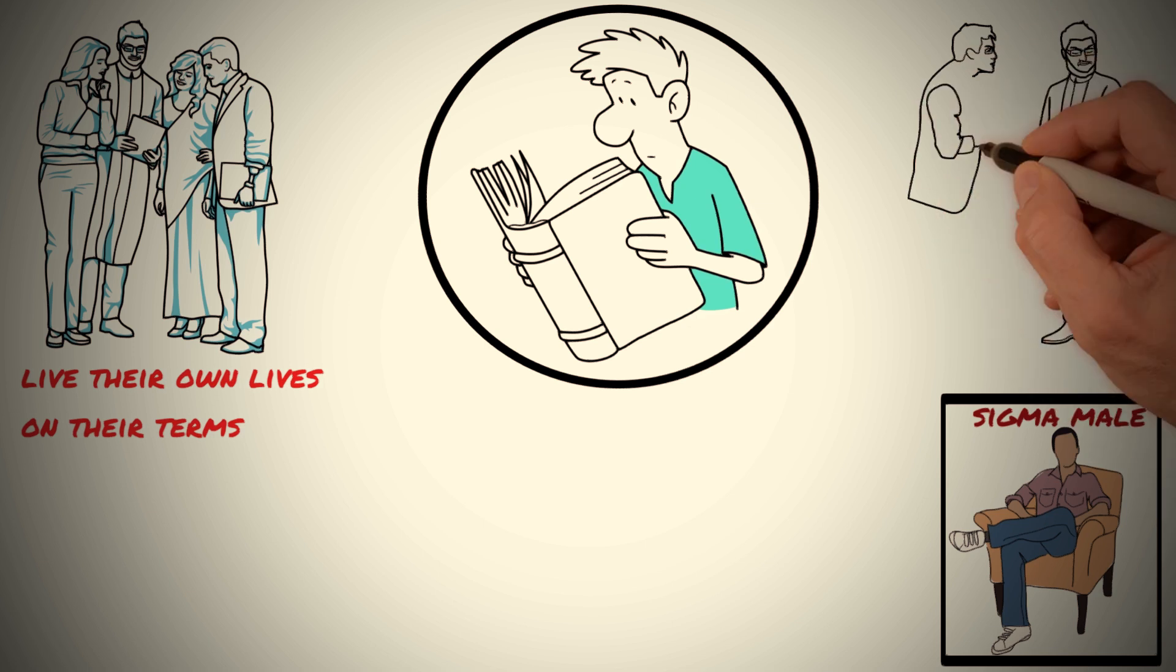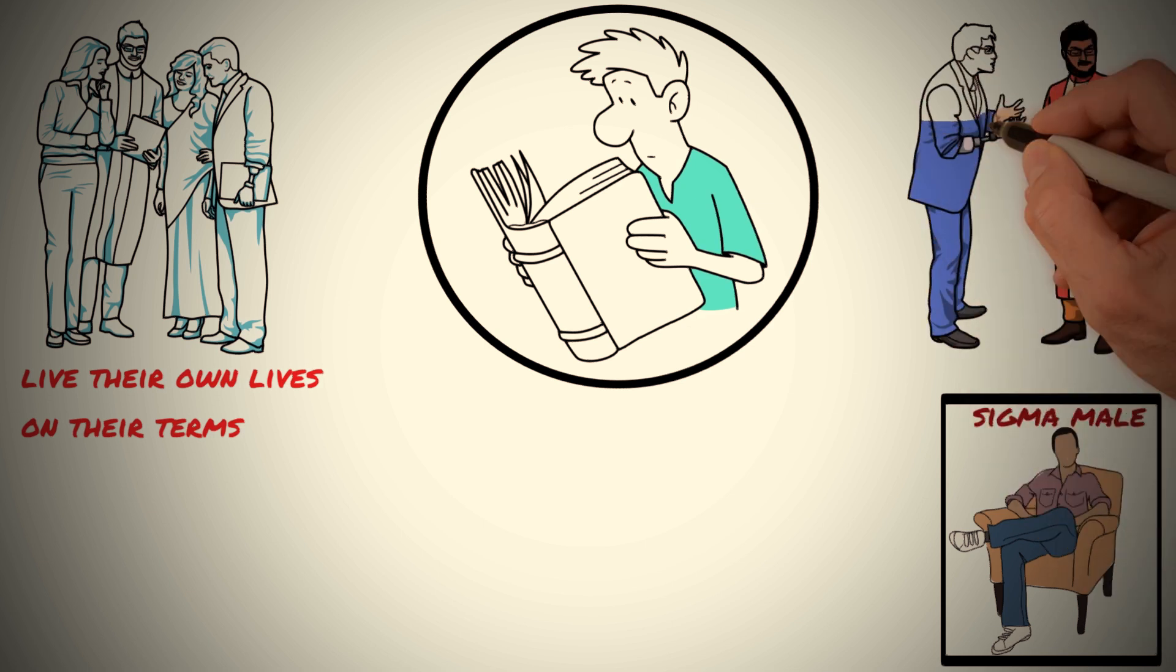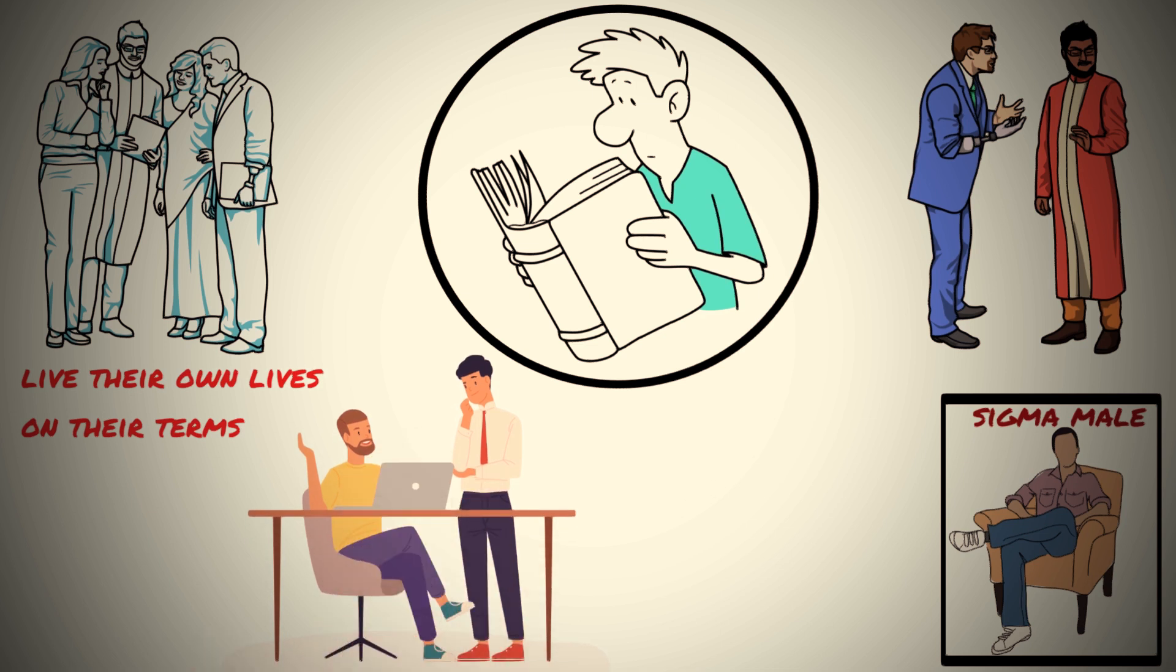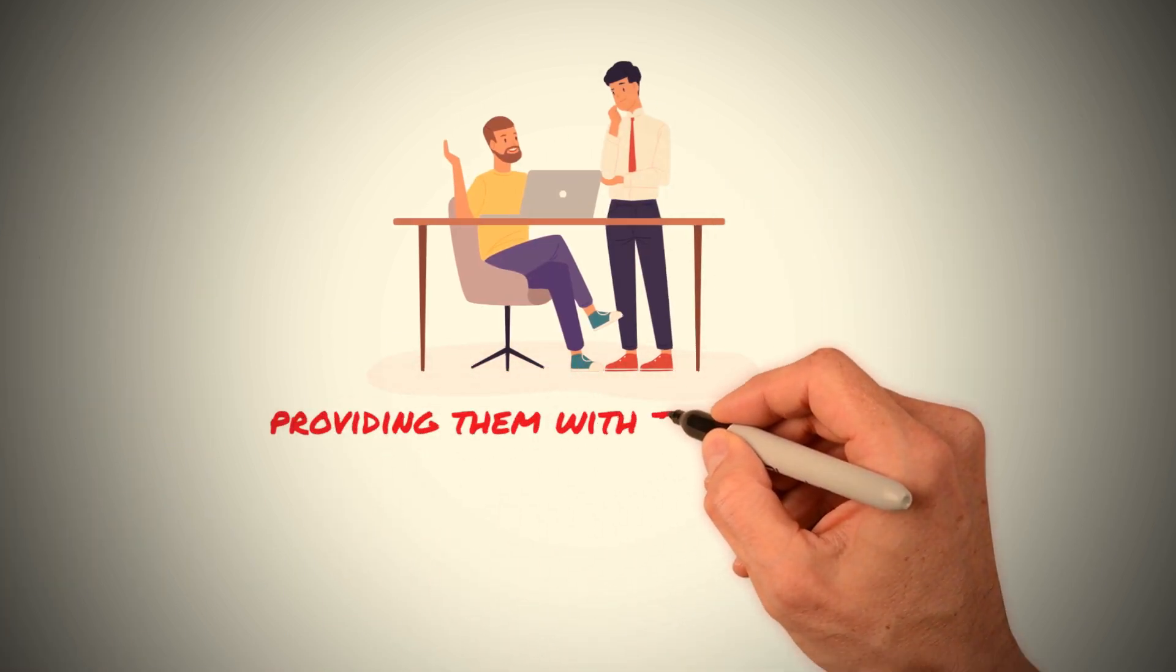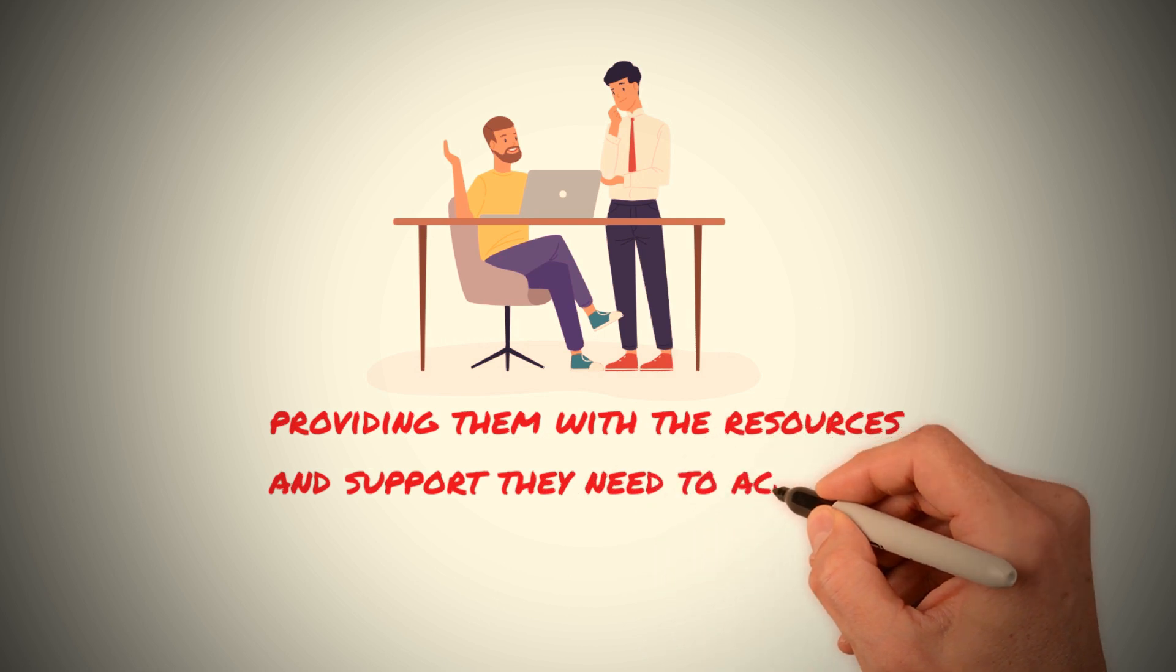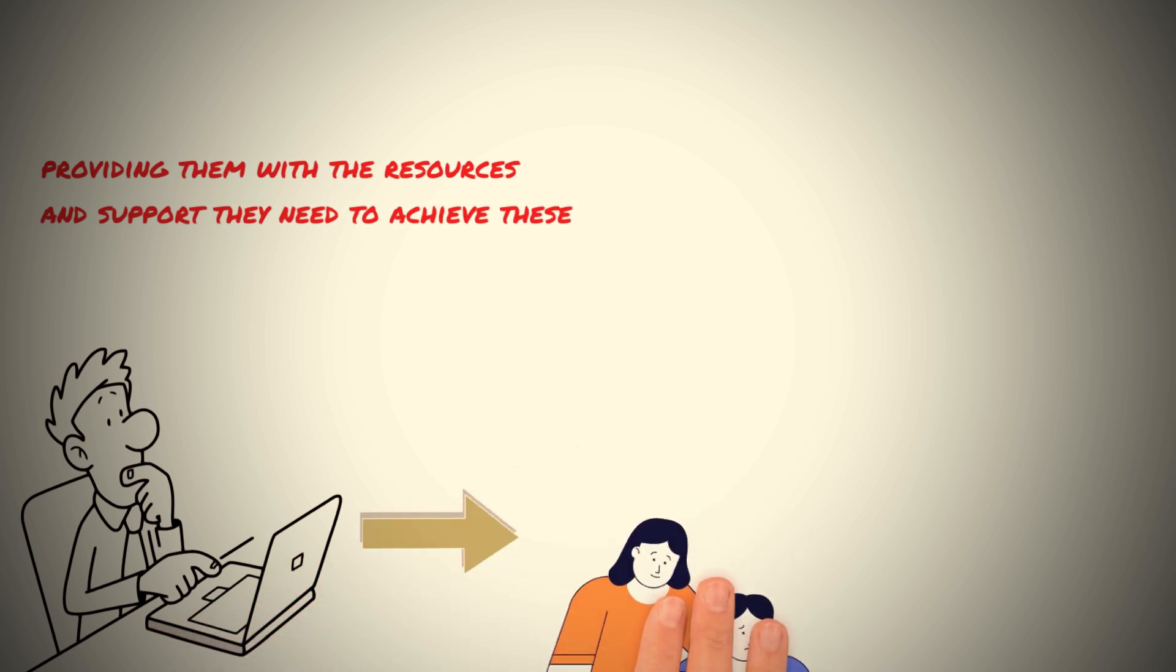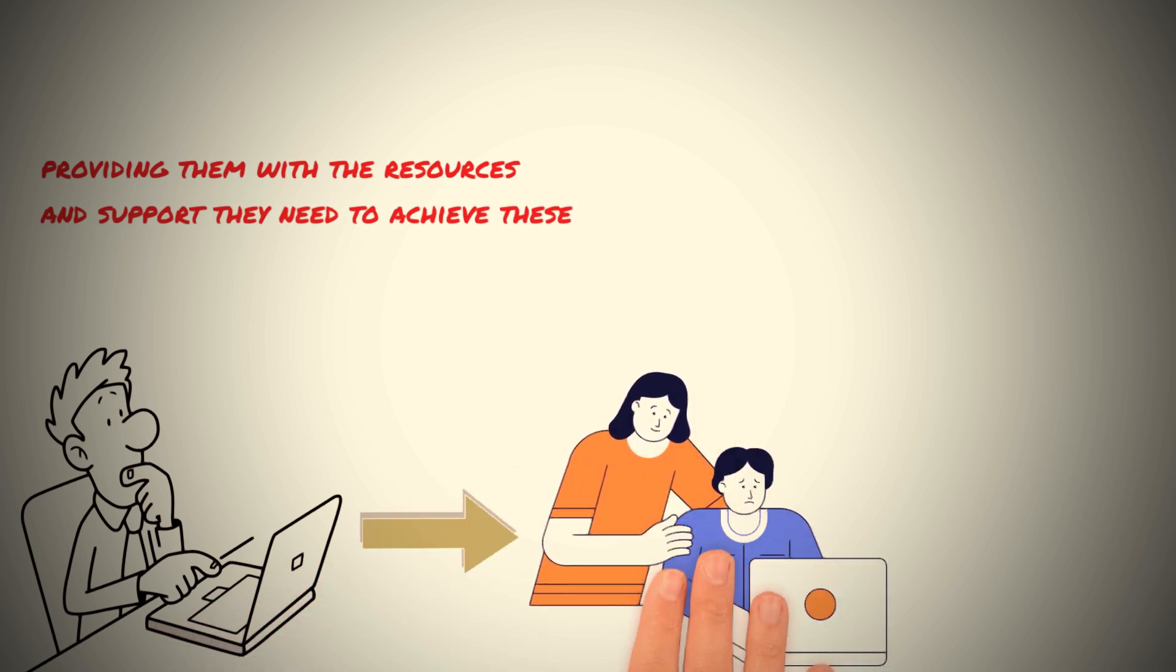Respecting autonomy is not just about allowing people to do whatever they want, however. It also involves recognizing and honoring their values, goals, and preferences, and providing them with the resources and support they need to achieve these. This might mean giving people the space and time they need to make important decisions or helping them access information and resources that will enable them to pursue their goals.